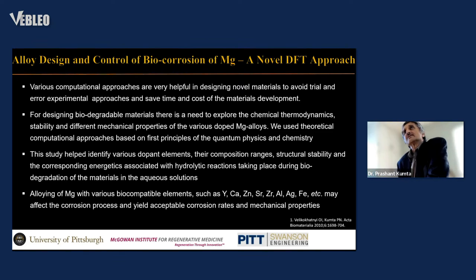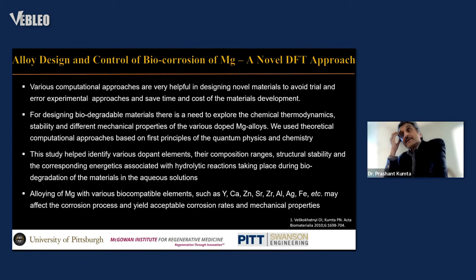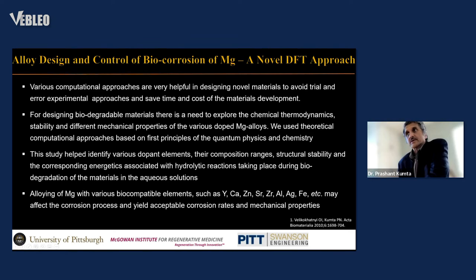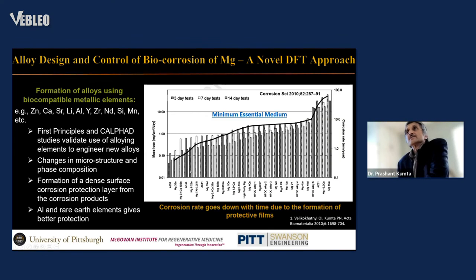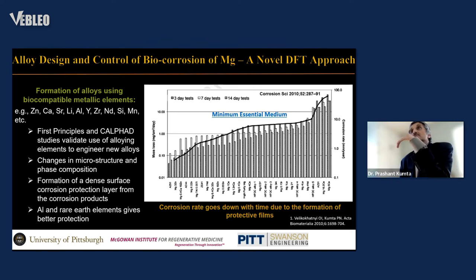In our lab, we have used alloy design to control the corrosion, employing a density functional theory (DFT) computational approach to identify alloying elements that are biocompatible and can slow down the corrosion of magnesium. Alloying elements identified include yttrium, calcium, zinc, strontium, zirconium, aluminum, silver, and iron. These affect corrosion properties and result in favorable corrosion rates. Our DFT approach identified elements that change microstructure and phase composition to form a dense surface corrosion protection layer, with a chart showing the performance of these elements in biological fluid — some slow corrosion, some accelerate it.